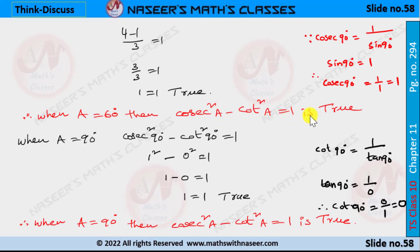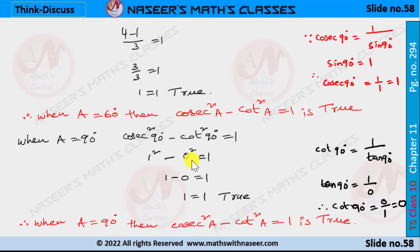When a = 90°, the identity cosec²90° − cot²90° = 1. We know cosec90° = 1 and cot90° = 0. Substituting: 1² − 0² = 1, which gives 1 − 0 = 1, therefore 1 = 1. This is true. So the identity cosec²a − cot²a = 1 holds for all values from 0° to 90°.